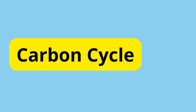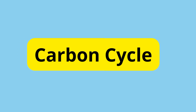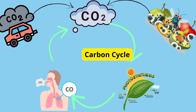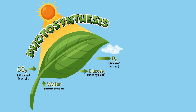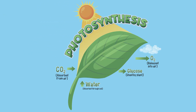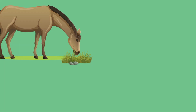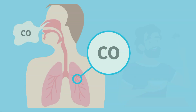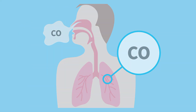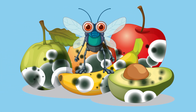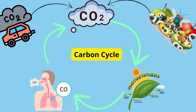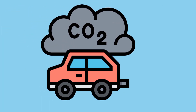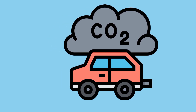Next up, the carbon cycle. It's all about how carbon moves from the atmosphere into living things and back again. Plants absorb carbon dioxide and turn it into food. When animals eat plants, they take in this carbon. But there's more — when living things breathe out, die, or decompose, they return carbon to the environment. Even fossil fuels are part of this cycle when we burn them for energy.